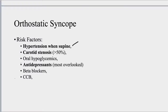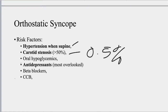Risk factors include hypertension when supine and carotid stenosis greater than 50%, though this is very rare. The American College of Cardiology and American Heart Association recommend against using carotid Doppler as first-line workup, as it contributes to understanding syncope in only about 0.5% of patients — meaning a number needed to treat of 200. It is typically used only after everything else has been ruled out. If carotid stenosis is already known, it is a relevant risk factor for syncope. Also notable are antidepressants as the most commonly overlooked cause, and oral hypoglycemics.